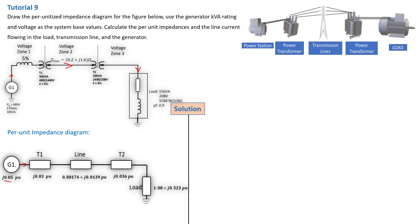From here we can determine the currents asked for: the current flowing out of the generator, the current flowing into the transmission line, and the current flowing into the load — three different currents. You might think that because this is a series circuit flowing downstream to the load, the currents on all sections will be the same. You would be very wrong.